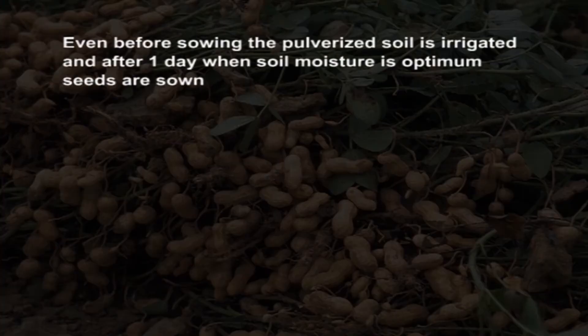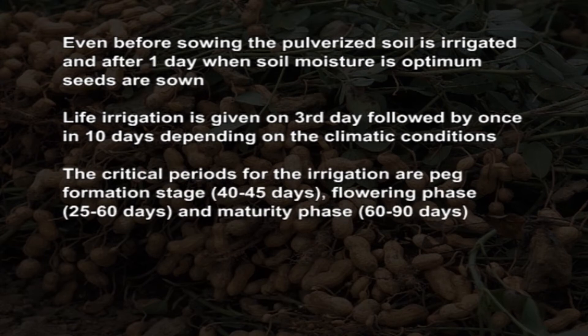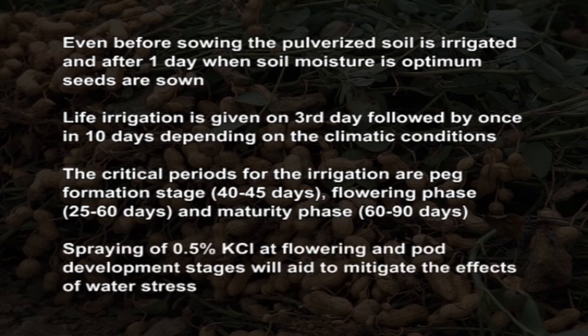For irrigation, even before sowing the pulverized soil is irrigated and after one day, when soil moisture is optimum, seeds are sown. Life irrigation is given on the third day followed by once in 10 days depending upon climatic conditions. The critical periods for irrigation are peg formation stage at 40 to 45 days, flowering phase at 25 to 60 days, and maturity phase at 60 to 90 days. Spraying of 0.5% KCl at flowering and pod development stage will help mitigate the effect of water stress.